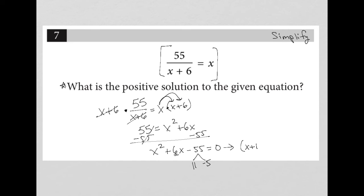So that means I can factor this trinomial into x plus 11 and x minus 5 equals zero. And then setting each of these binomials equal to zero separately gives me my solutions, which are x equals negative 11 and x equals positive 5. The question asks for the positive solution, which is 5. So our answer here is 5.